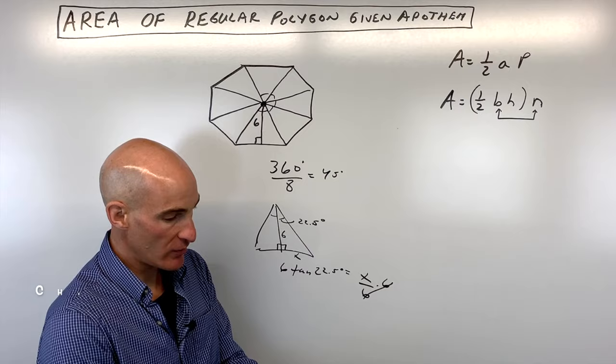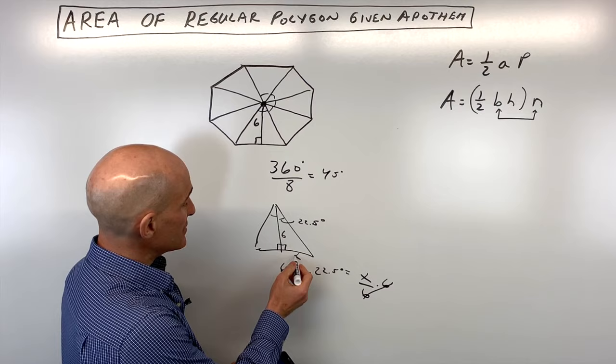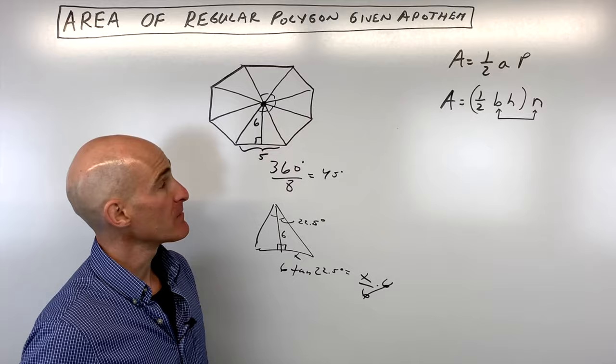Let's go to the calculator real quick and do that. 6 tan of 22.5. It comes out to about 2.5. But we're going to have to double it since each of these is 2.5. So that means the length of this side here is going to be 5.